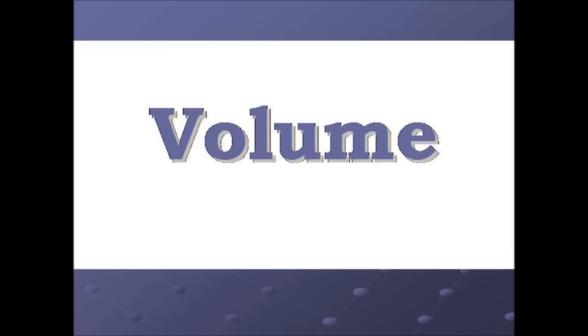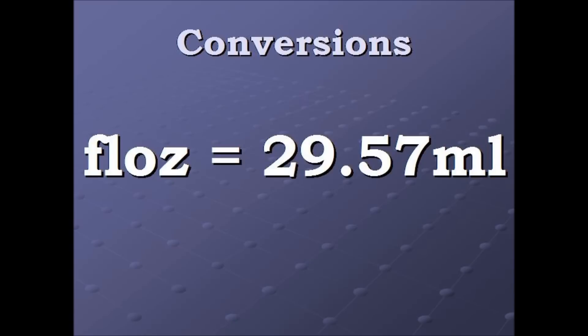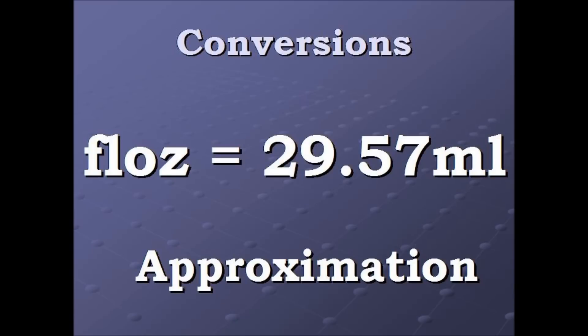Here's our example. We have three fluid ounces that we're going to convert into milliliters. Here's our conversion factor: one fluid ounce equals 29.57 milliliters, and this is an approximation.